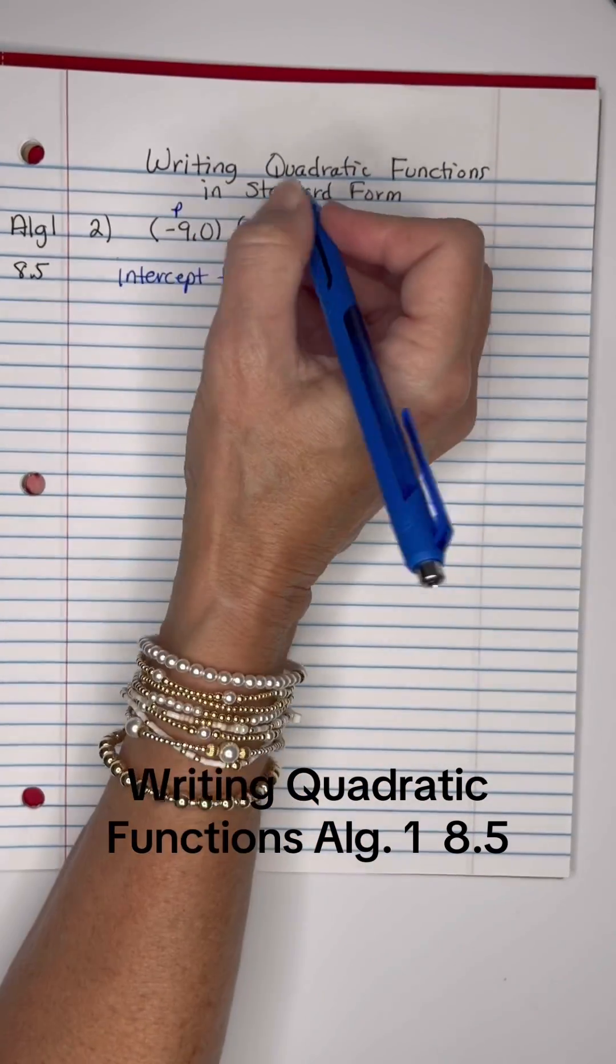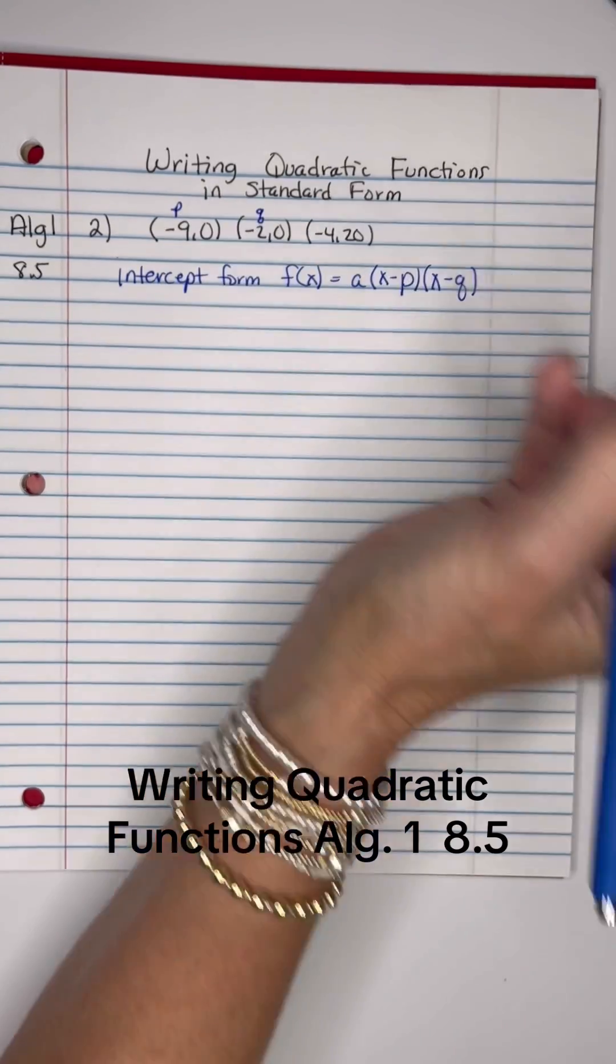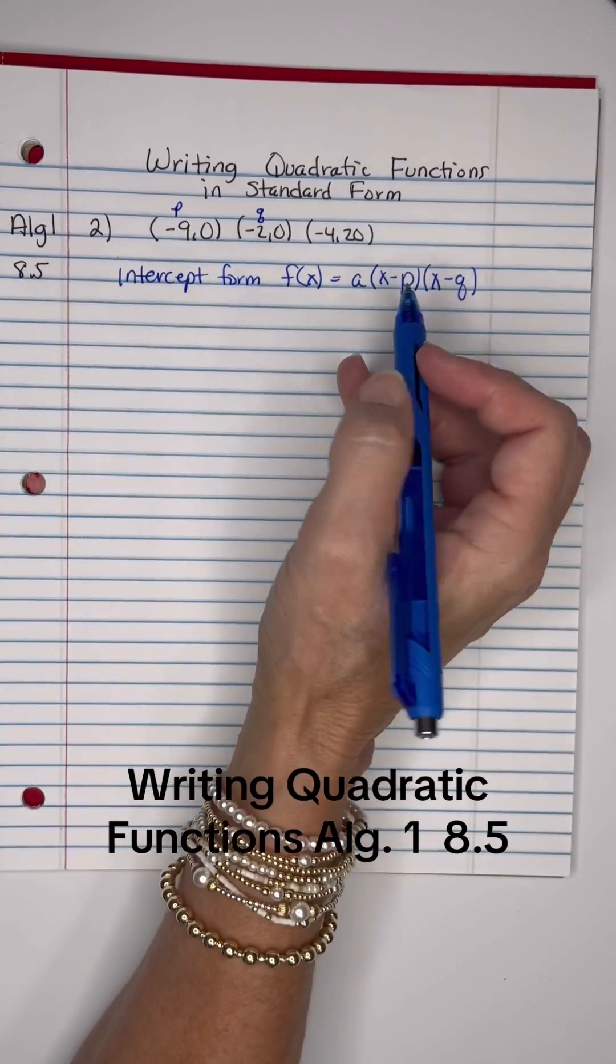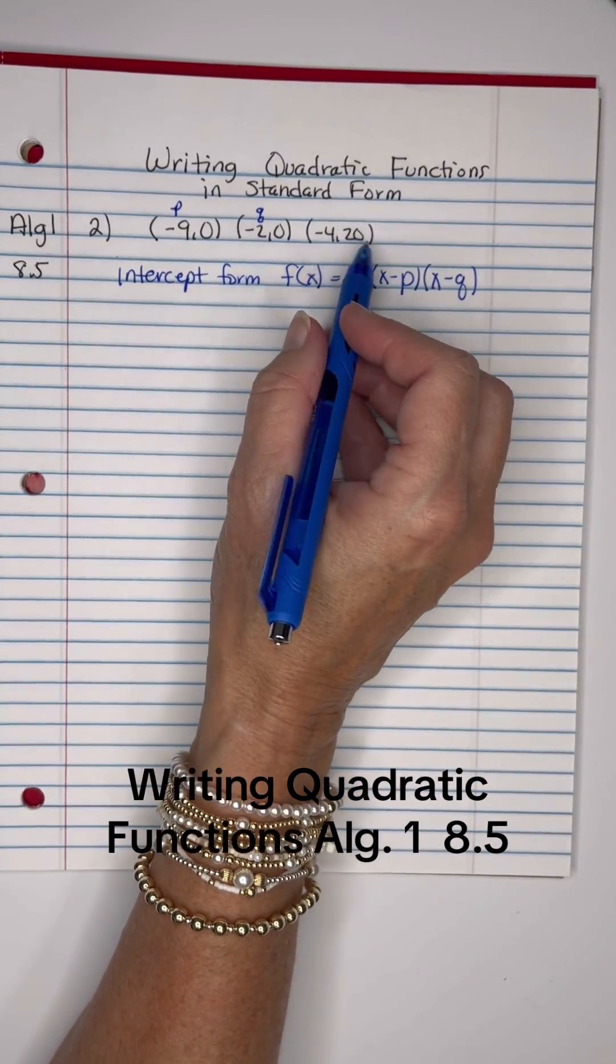We'll let the negative 9 be the p and we'll let the negative 2 be the q. All right, so here's my formula and we'll have to use this to find the a.